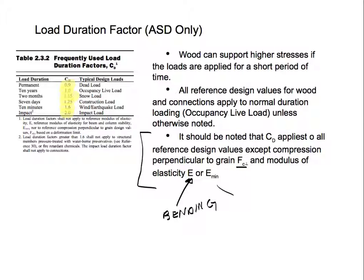And this is for columns — for axial loads. They have columns and compression, or beams in compression. So that's for E-min in those cases. That's pretty much it for the load duration factor for ASD.